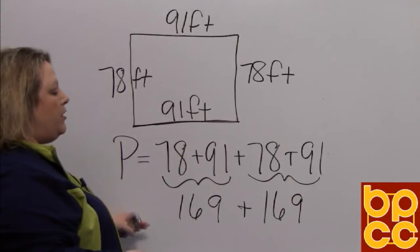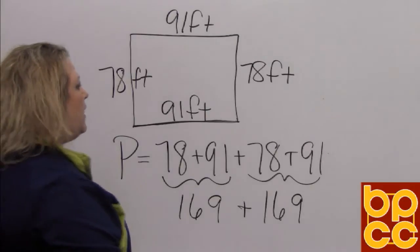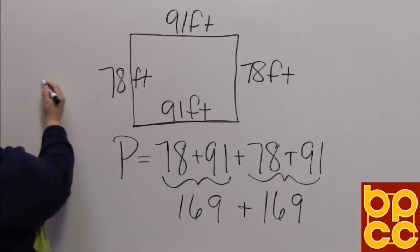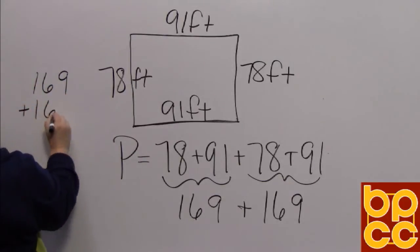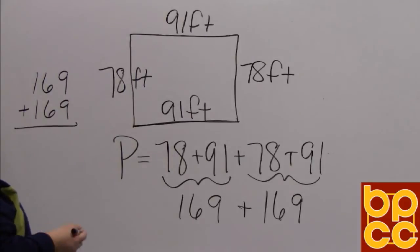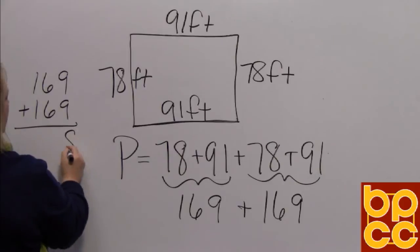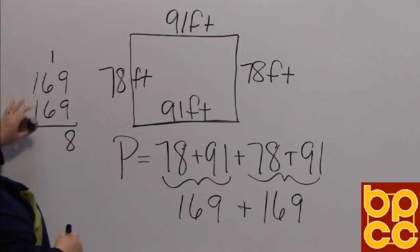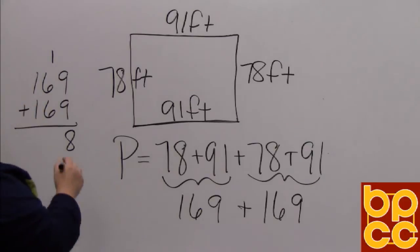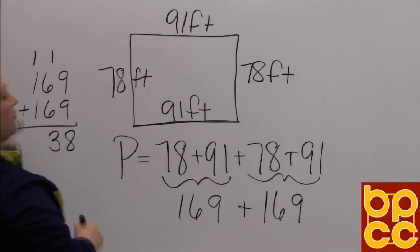And then to find the final perimeter, all you have to do is add those two groups together. So when we do that, I'm going to come over here. And that would be 169 plus 169. And when we add that, remember our rules for addition would be 9 plus 9 is 18. So we put the ones digit down, carry the tens digit. And then 6 plus 6 is 12, plus the one that we carried makes 13. So put the 3 down for the ones digit, carry the tens. And then that makes 1, 2, 300.